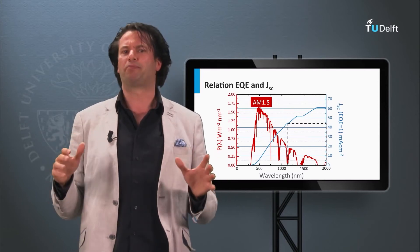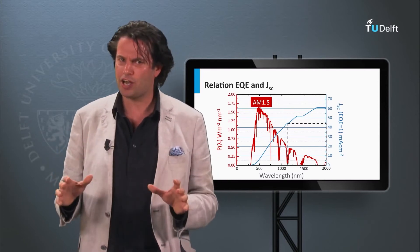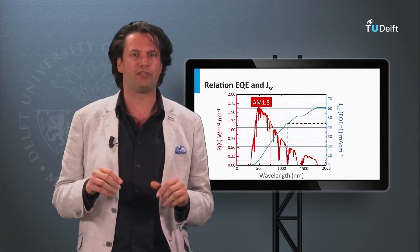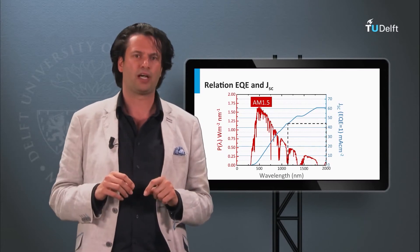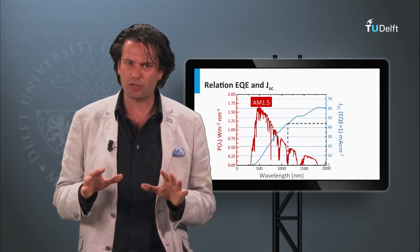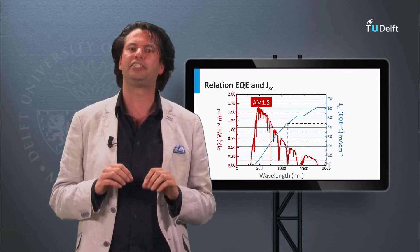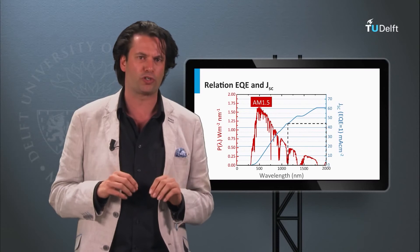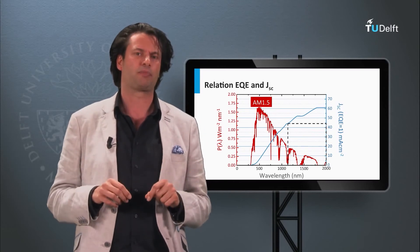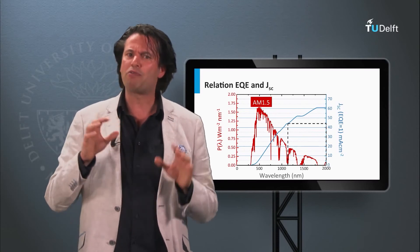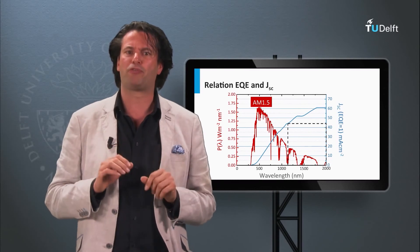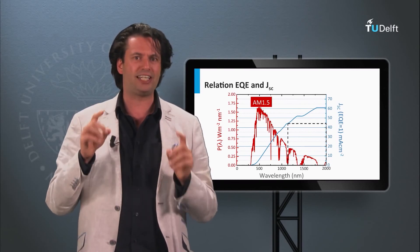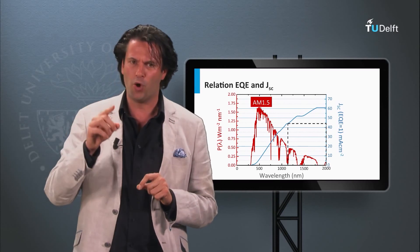In summary, we have discussed how to determine the spectral utilization of a single junction solar cell. The band gap of the semiconductor material determines the theoretical maximum current density and open circuit voltage that can be obtained. In the next block, we will discuss the optimum performance of single junction solar cells under standard test conditions in more detail.